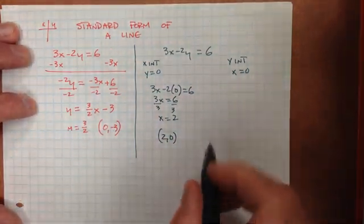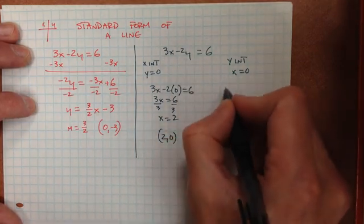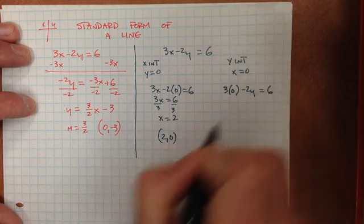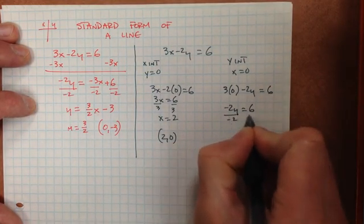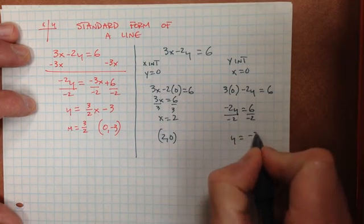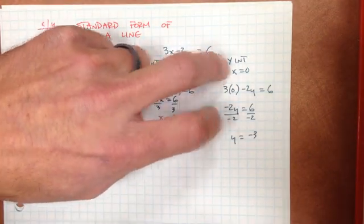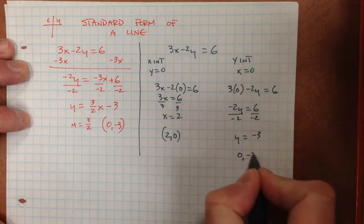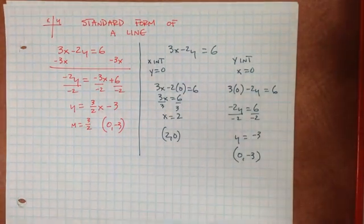Doing the same thing for the y-intercept, we substitute x equals 0: 3 times 0 minus 2y equals 6, so negative 2y equals 6, divide by negative 2, y equals negative 3. That is also a point — you have an x-value and a y-value — so the point would be (0, negative 3). An x-intercept and a y-intercept to graph the line.